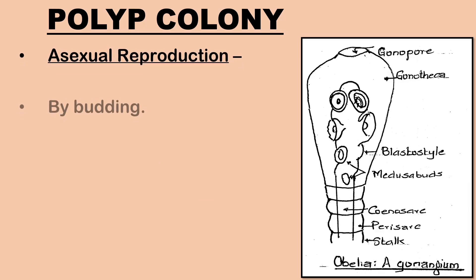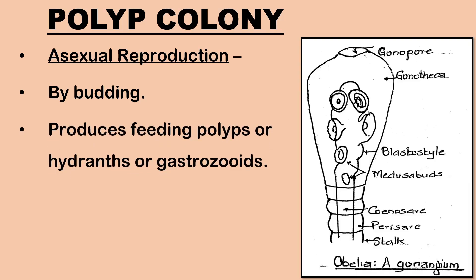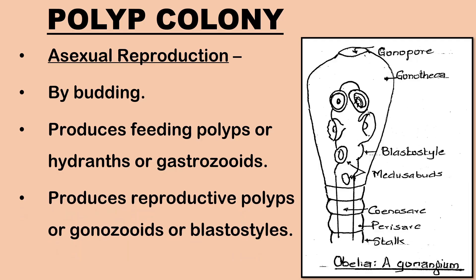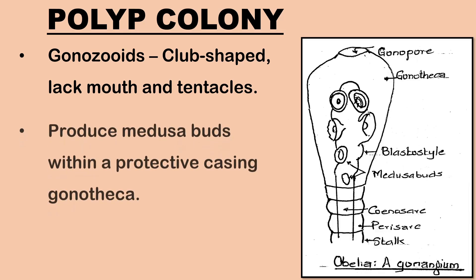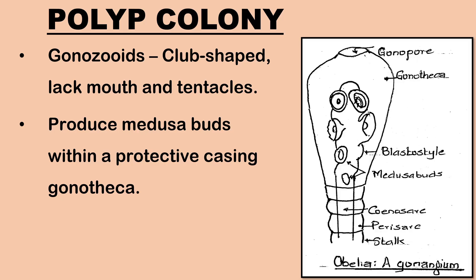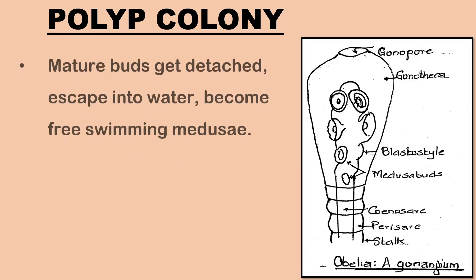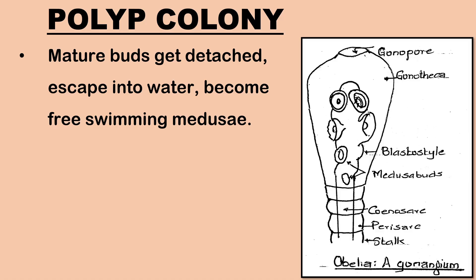In Obelia, polyps reproduce asexually by budding. Budding produces new feeding polyps or hydranths or gastrozooids and new reproductive polyps or gonozooids or blastostyles. Gonozooids are club-shaped and lack mouth and tentacles. They produce small bell-shaped medusa buds which develop within a protective casing called the gonotheca. When mature, they detach from the blastostyle and escape into water through an opening called the gonopore and become free-swimming medusae.